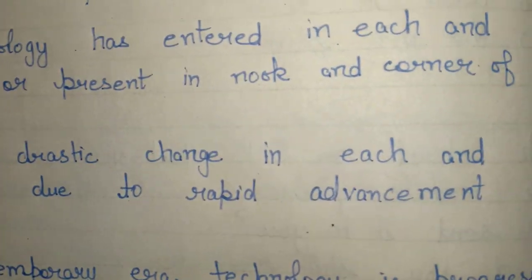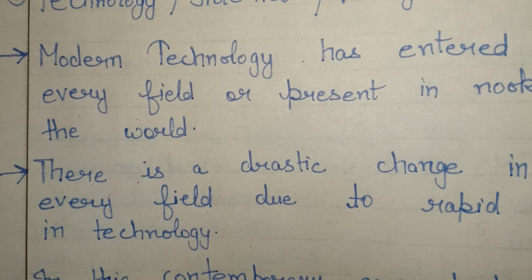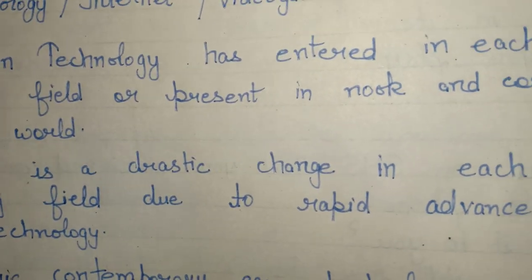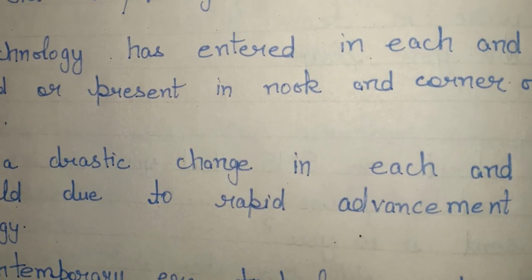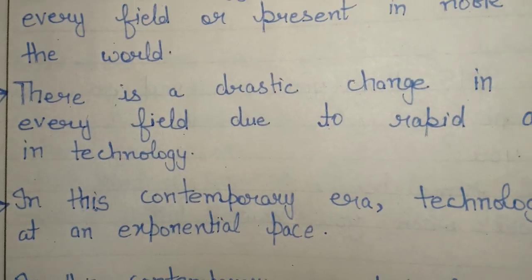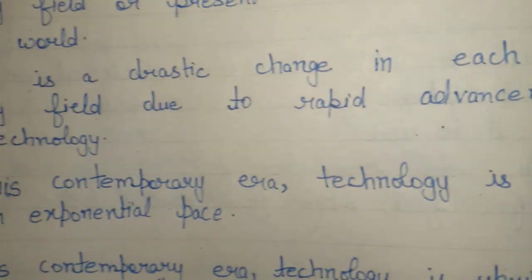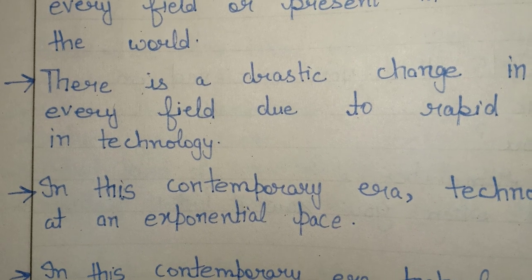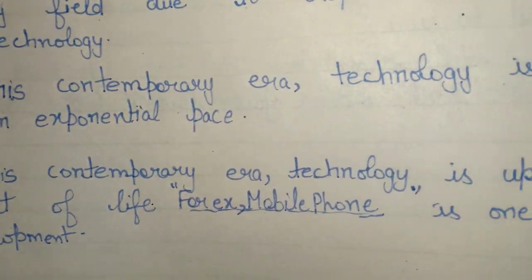The next hook line is: 'There is a drastic change in each and every field due to rapid advancement in technology.' And the next one is: 'In this contemporary era, technology is progressing at an exponential pace.'